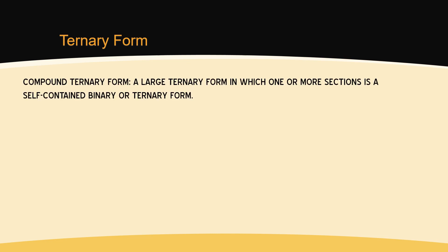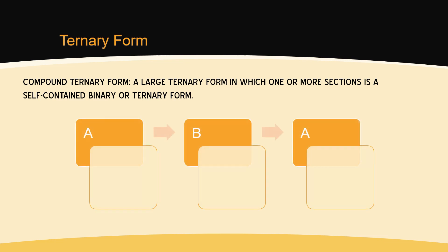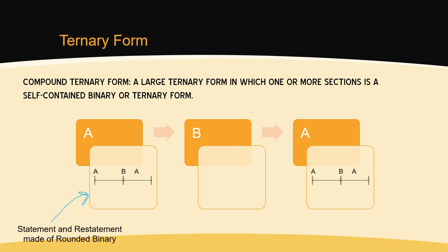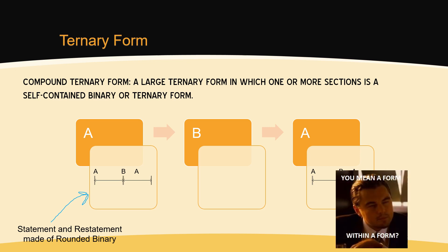Ternary forms can also be compound, meaning that one or more of the sections is in itself a self-contained binary or ternary form. Think of a compound ternary form as a ternary form in which one or all of its sections has an embedded binary or ternary form in it — it's like the musical version of Inception, a form within a form. Compound ternary forms most often exist as larger ternary forms, perhaps the middle movement of a symphony or sonata, or as da capo movements such as a minuet and trio or a da capo aria.